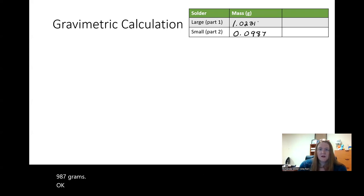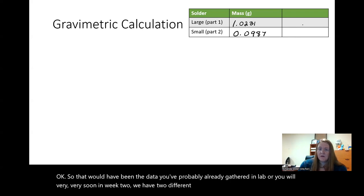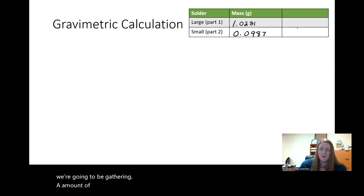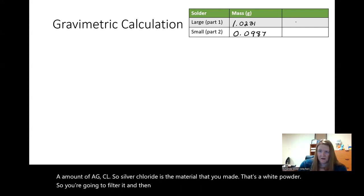So that would have been the data you've probably already gathered in lab, or you will very, very soon. In week two, we have two different kinds of data we're gathering. For part one, we're going to be gathering an amount of AgCl, so silver chloride is the material that you made that's a white powder. So you're going to filter it, and then dry it, and then weigh it.